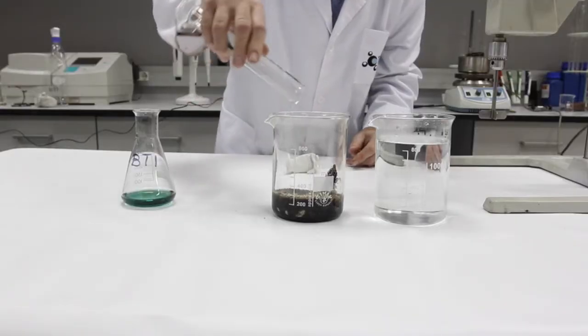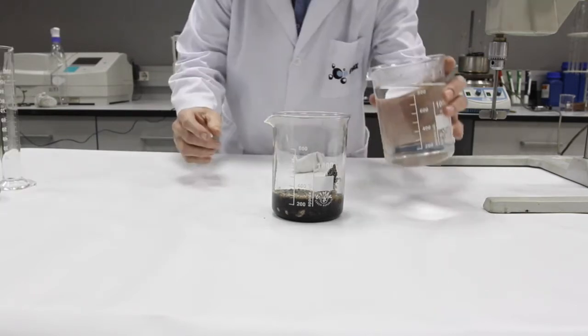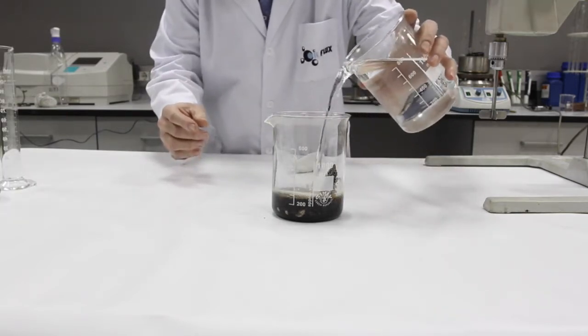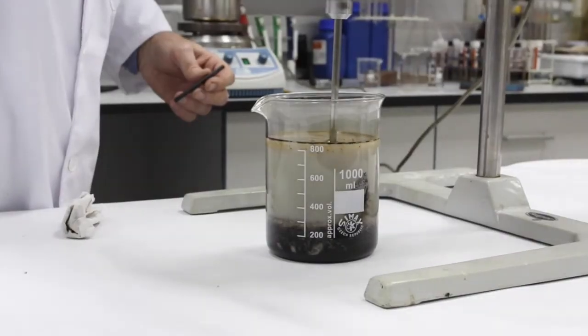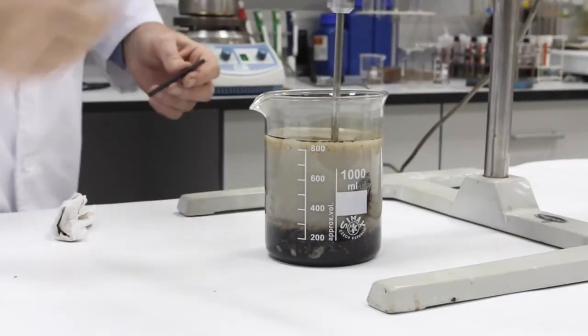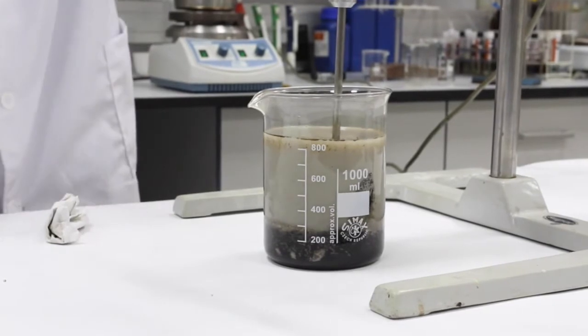Since the beaker has a capacity of 800 milliliters, the lab technician proceeds to pour 40 milliliters of BTI and fill it with warm water. The emulsion formed is agitated at 500 rpm for about 20 minutes.